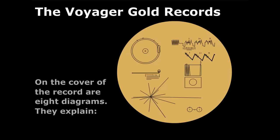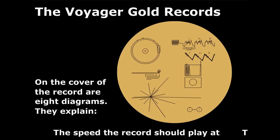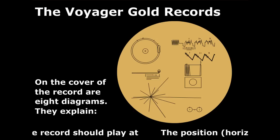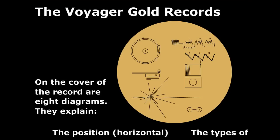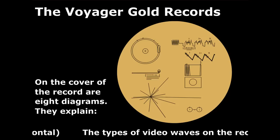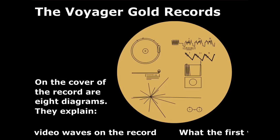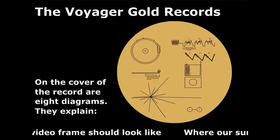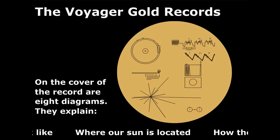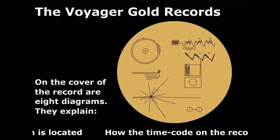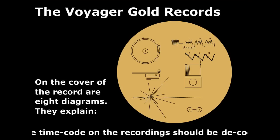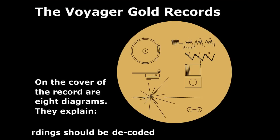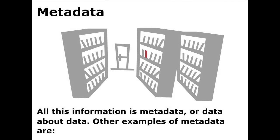On the cover of each record are eight diagrams. They explain the speed the record should play at, the position, horizontal, the types of video wave on the record, what the first video frame should look like, where our sun is located, and how the timecode on the recordings should be decoded. All this information is metadata, or data about data.